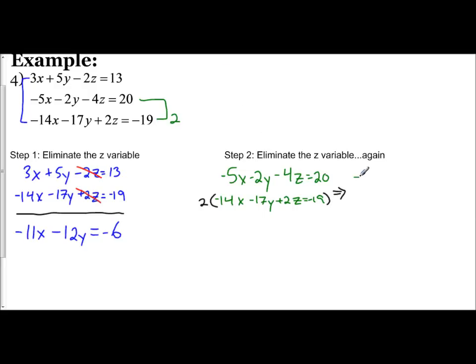The top equation stays the same, negative 5x minus 2y minus 4z equals 20. I double everything in the bottom equation to get negative 28x minus 34y plus 4z equals negative 38. That gave us our opposites of 4z and negative 4z. So, I can add my inequalities vertically. Negative 5x minus 28x is negative 33x. Negative 2y minus 34y is negative 36y. And 20 minus 38 is negative 18.